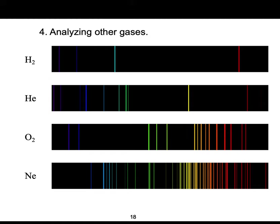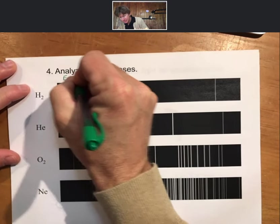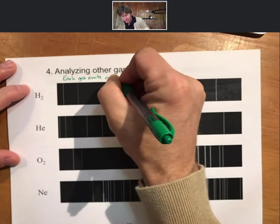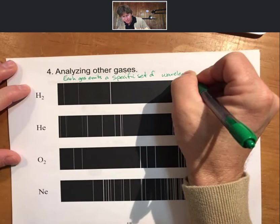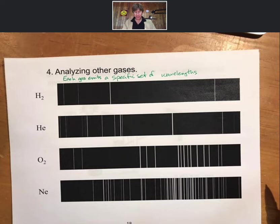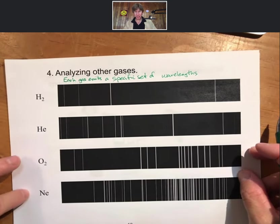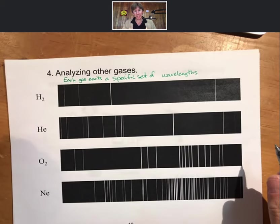We get different colors for other gases, yet none of them has a total spectrum of all the colors. Analyzing other gases, each gas emits a specific set of wavelengths. As a general trend, as you get larger and larger atoms — really comparing the hydrogen atom and the oxygen atom — you do get more wavelengths.